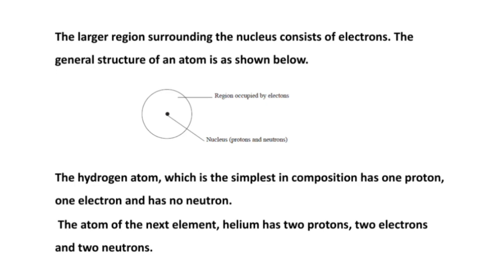The hydrogen atom, which is the simplest in composition, has one proton, one electron, and has no neutron. The next simplest atom is helium, which has two protons, two electrons, and two neutrons.